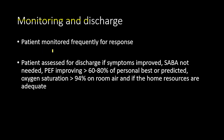For monitoring and discharge: the patient should be monitored frequently for response and assessed for discharge if symptoms have improved, short-acting beta agonist is no longer needed, peak expiratory flow rate is improving to more than 60–80% of personal best or predicted, oxygen saturation is higher than 94% on room air, and home resources are adequate.